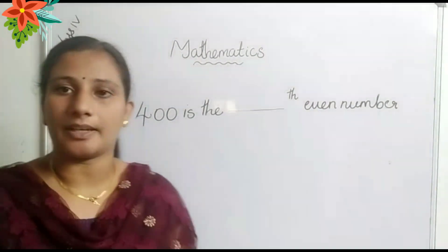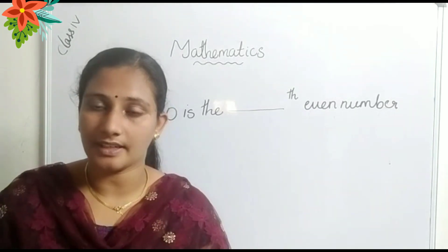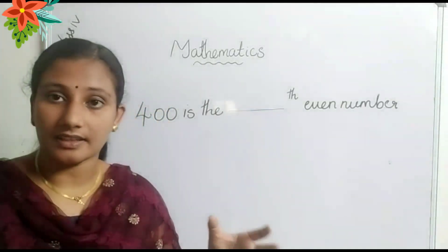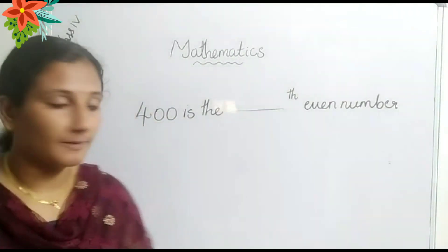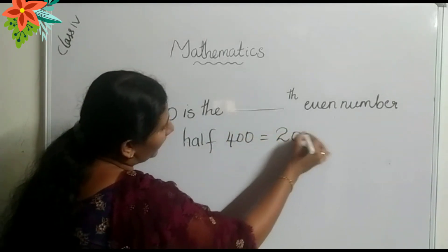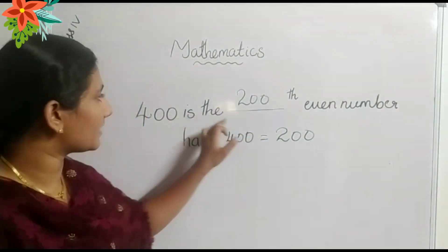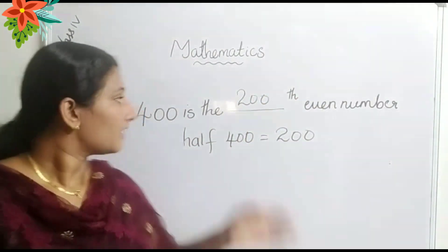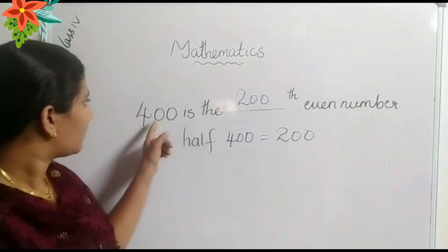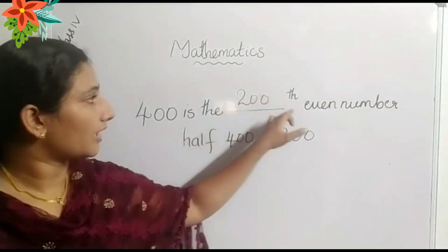Four hundred is which even number? How do we find? Let us find the answer. The half of four hundred is two hundred. So the two hundredth even number is four hundred. That means four hundred is the two hundredth even number. The number is the half.